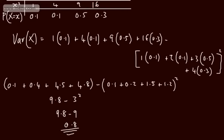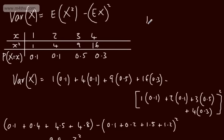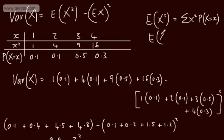To clarify the notation: E(X²) means summing x² multiplied by P(X=x), while E(X) means summing x multiplied by P(X=x). The probabilities P(X=x) are the same in both cases — we just change whether we use x or x² in the multiplication. That's a basic introduction to Var(X) for a discrete random variable.